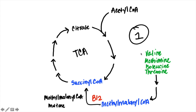Additionally, four amino acids can be converted to methylmalonyl-CoA through a series of steps: valine, methionine, isoleucine, and threonine. So with a B12 deficiency, not only can you not convert methylmalonyl-CoA to succinyl-CoA, but you're also unable to bring these four amino acids through that pathway into the citric acid cycle — leaving you with one less way to generate substrates for it.